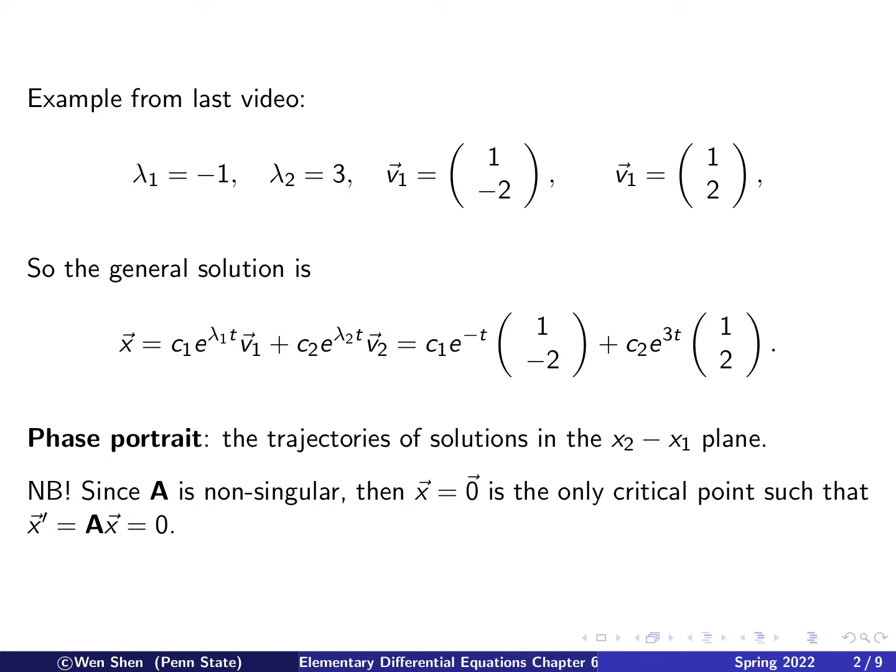Now we'll discuss how to draw such a phase portrait. For different values of constants c1 and c2, we get different trajectories — there are many of them. The discussion will follow this pattern: first, we set one of them to zero, either c1 or c2, and consider that trajectory. Then we consider the general case where both c1 and c2 are non-zero.